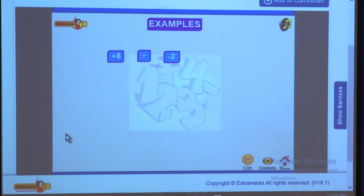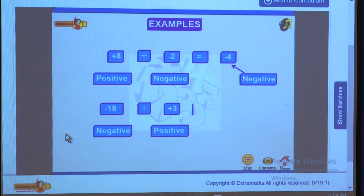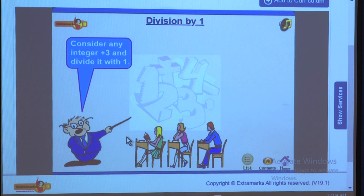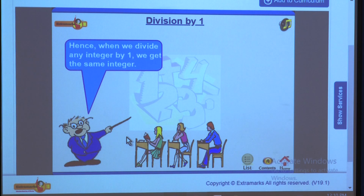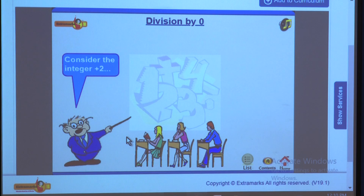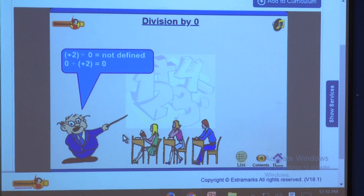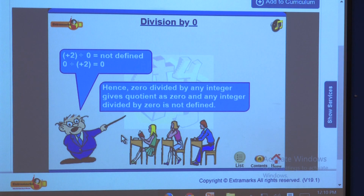Let us discuss different properties of division of integers. Division by 1: for any integer, say positive 3, dividing by 1 gives the same number. Therefore, any integer divided by 1 equals that integer. Division by 0: for any integer, say positive 2, division by 0 is not defined, but division of 0 by positive 2 gives 0. Hence, 0 divided by any integer gives 0, and any integer divided by 0 is not defined.